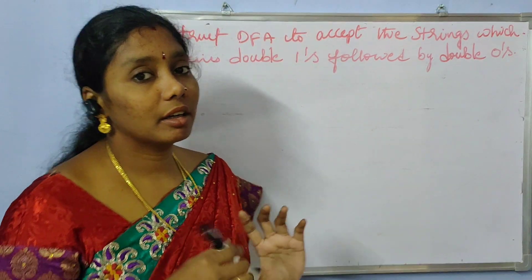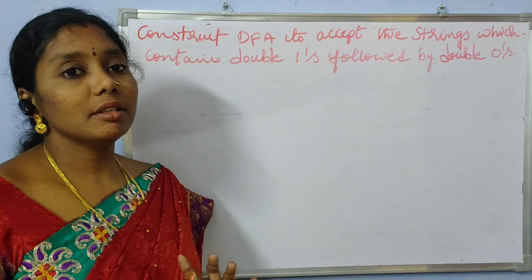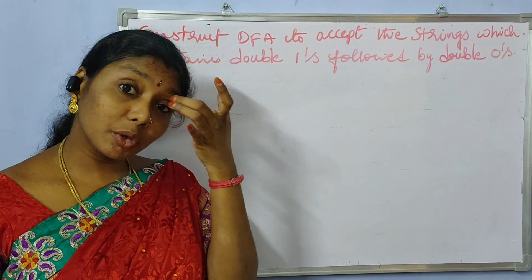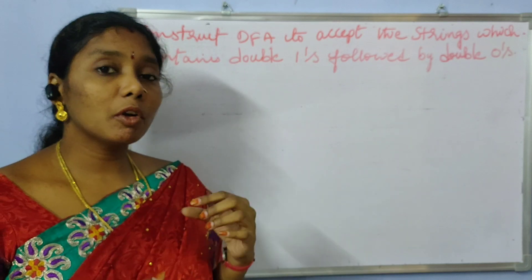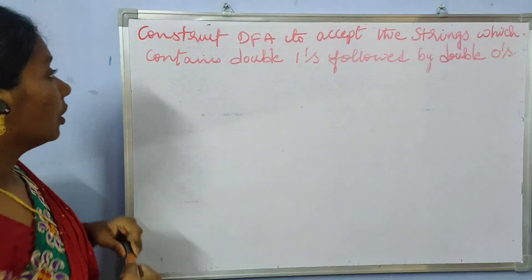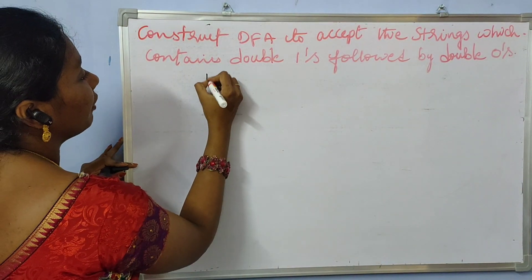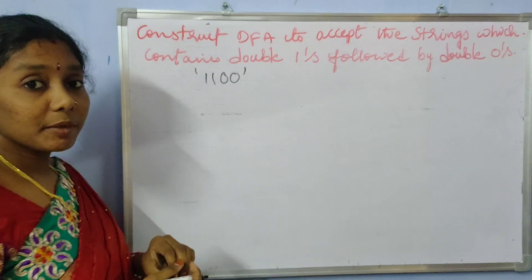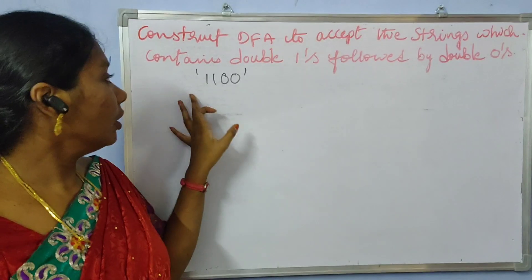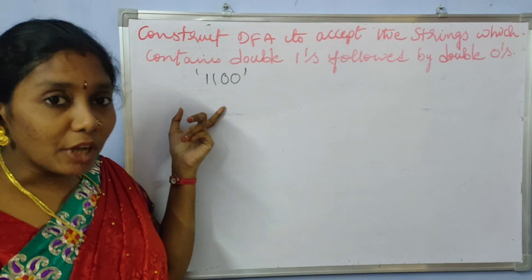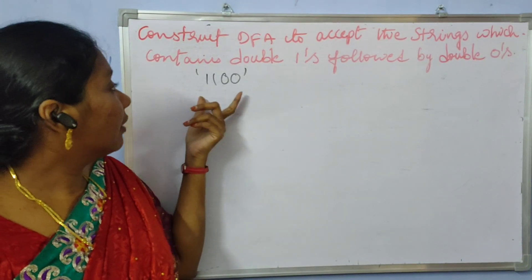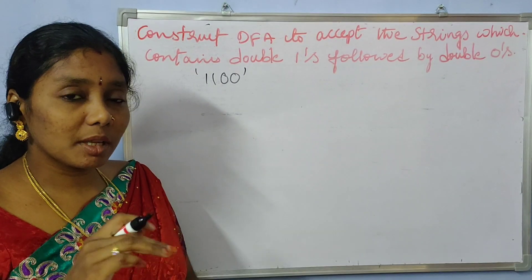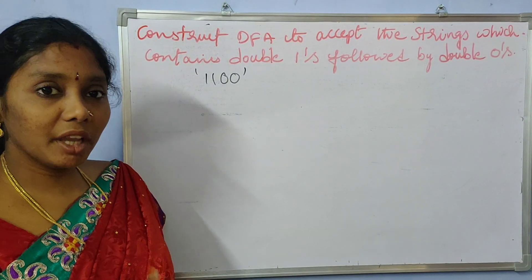The DFA should accept the strings which contain double 1 followed by double 0. It should accept all the strings where 1100 is a substring — any string containing 1100 as a substring needs to be accepted by this DFA.